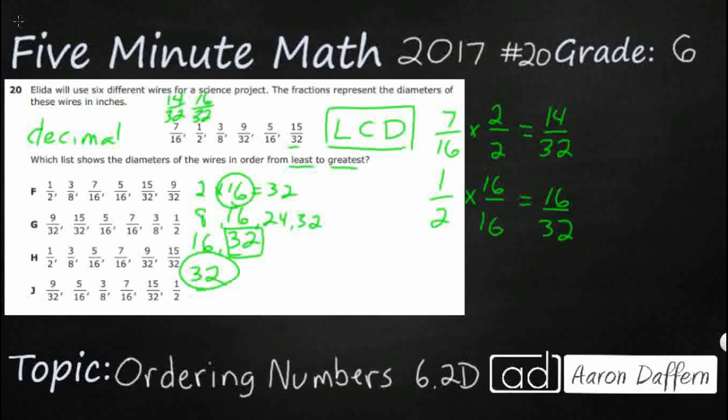Let's do 3/8. 8 times what is going to make 32? 8 times 4. Remember, we did all that work right there. So 4 on the bottom, 4 on the top. 4 times 3 is 12. And there we are. That's 12/32.